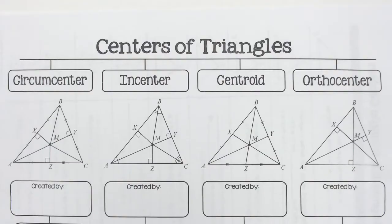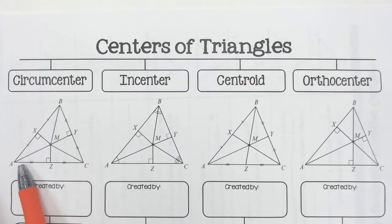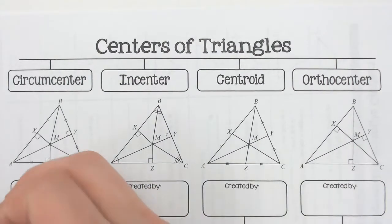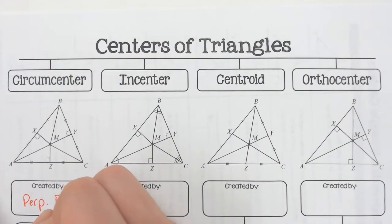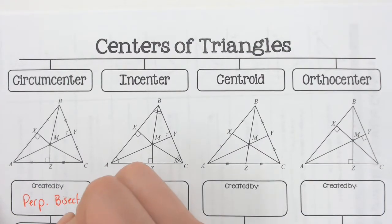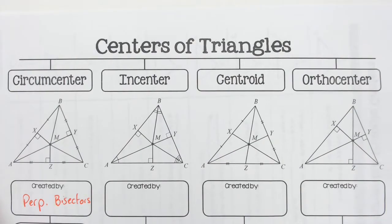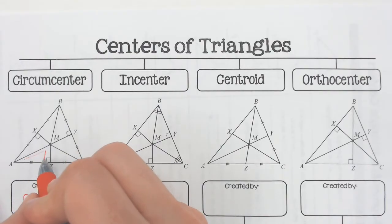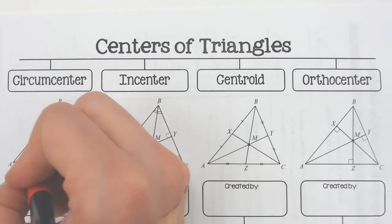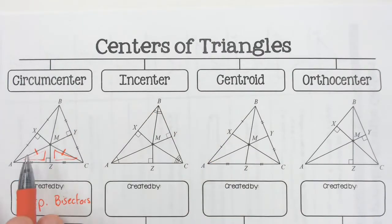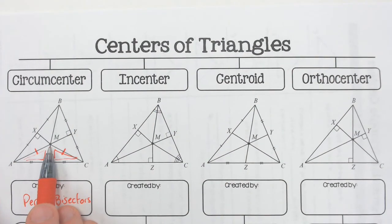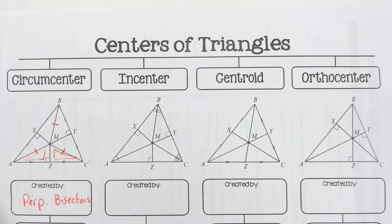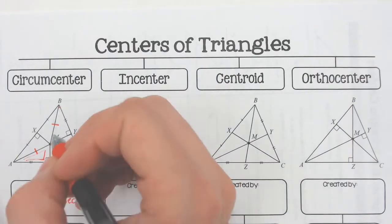The circumcenter is going to be created by the perpendicular bisector. They take the sides and cut them in half and go straight up with a 90 degree angle. So it is found with the perpendicular bisectors. Because these are the perpendicular bisectors, from each angle to the circumcenter would be equal. The circumcenter creates that scenario.